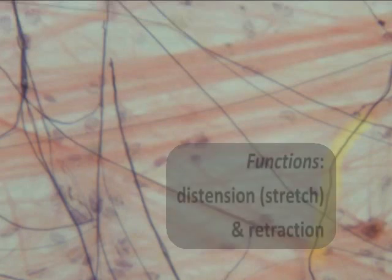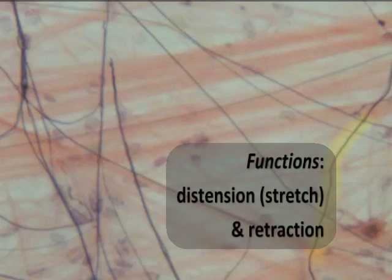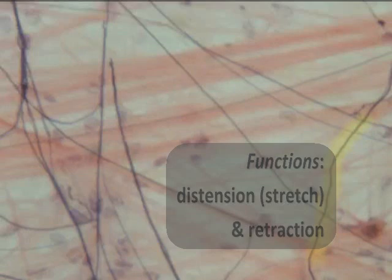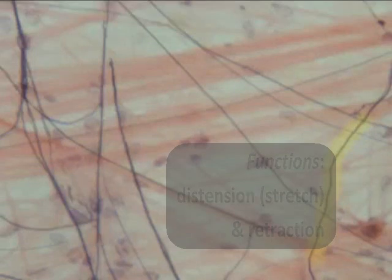We also occasionally have some elastic fibers — we see here some of these proteins that sometimes appear like coils. The elastic fibers provide the ability to distend and stretch, as well as to retract and return back to the tissue's original shape, providing strong durability. We find areolar connective tissue abundantly throughout the body.